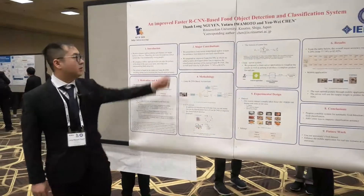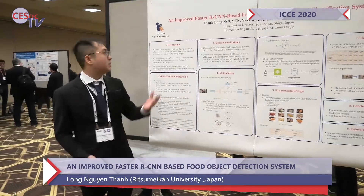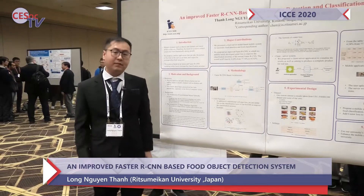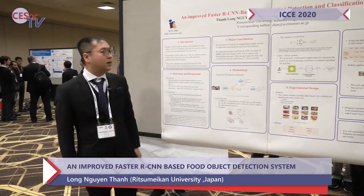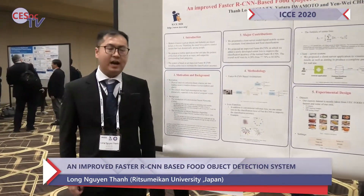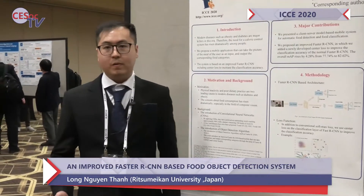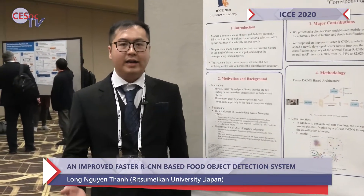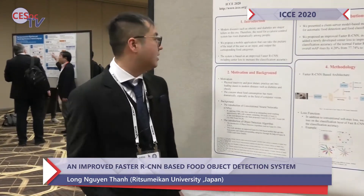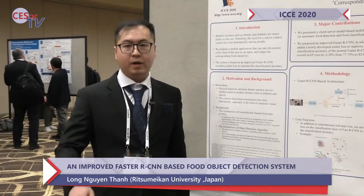Hello everyone, my name is Nguyen Thanh Long and my research is about an improved Faster R-CNN based food object detection and classification system. My motivation starts from the fact that modern diseases such as obesity and diabetes are major killers in this era. Therefore, people need a calorie control application for everyday use to control their calorie intake. We propose a mobile application that can take a picture of a user's meal as input and output the corresponding food categories.